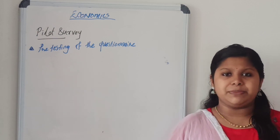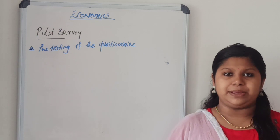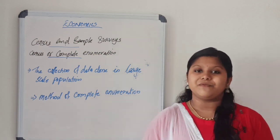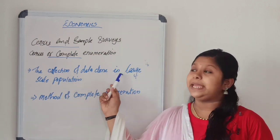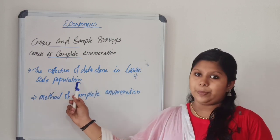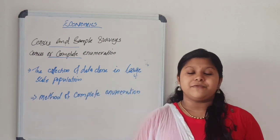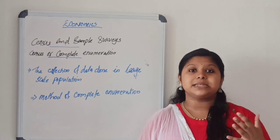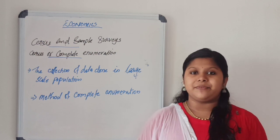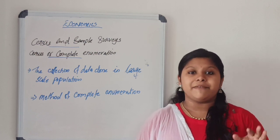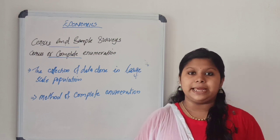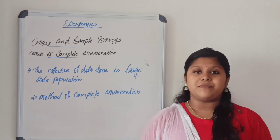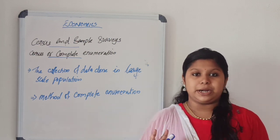Next, we look at what is meant by census and sample survey. The collection of data on a large scale population is known as census survey. It is done in India during every 10 years. The first census was done in 1881. It is also called complete enumeration.